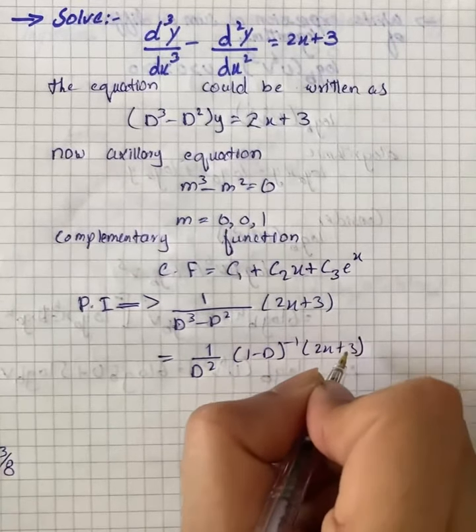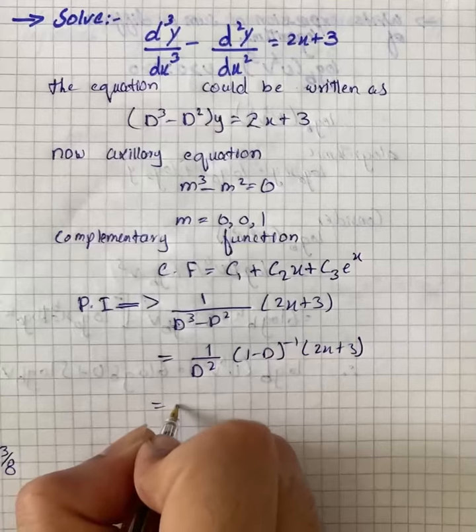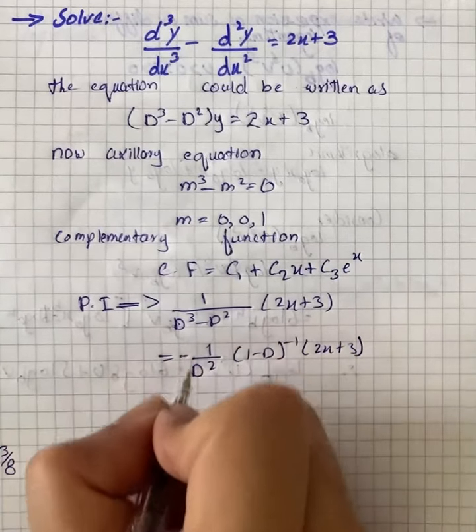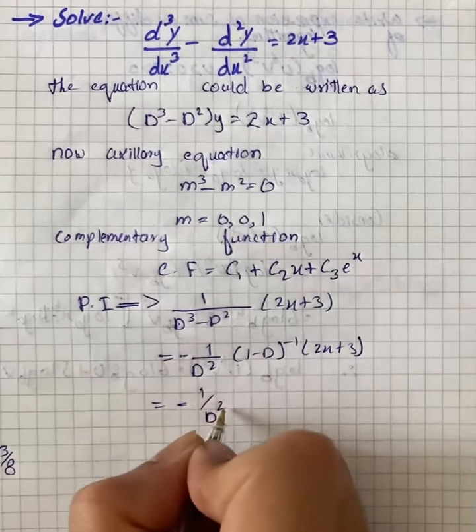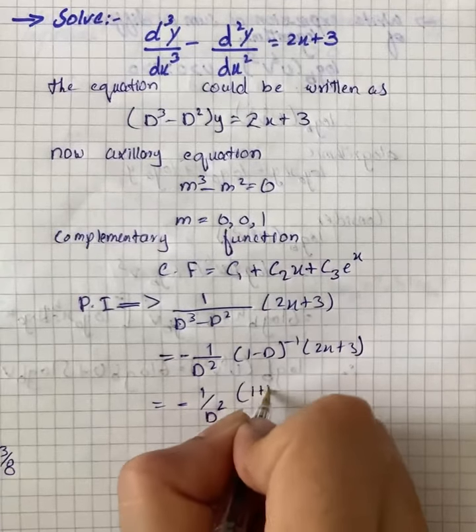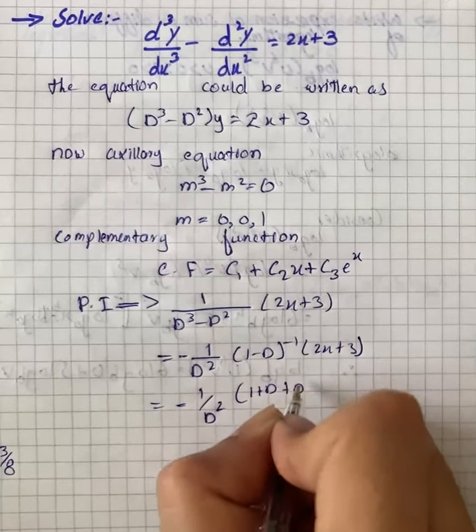Then we have -1/D² into (1 + D + D² + D³ + D⁴ and so on) into (2x + 3).